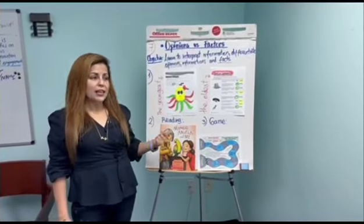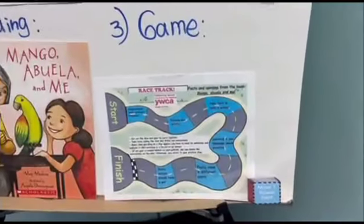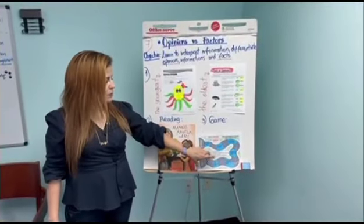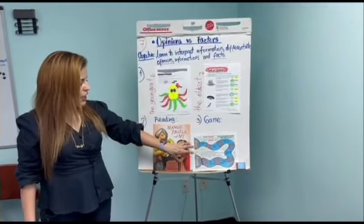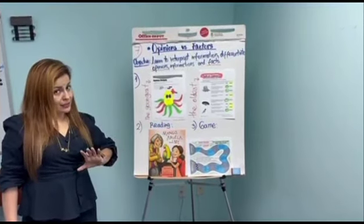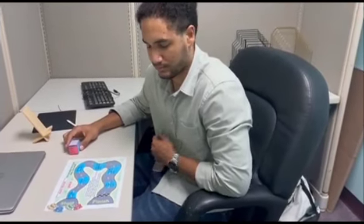To finish, we can make groups of four people to play a game called Racetrack. This game is especially designed based on sentences — facts or opinions — from the book. In the last part, we are going to play a game called Facts and Opinions, which is based on the book, so students will practice their knowledge about facts and opinions.